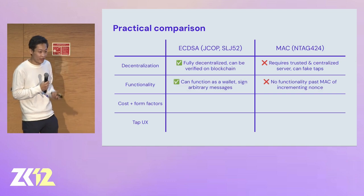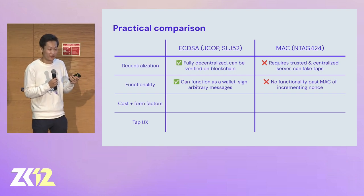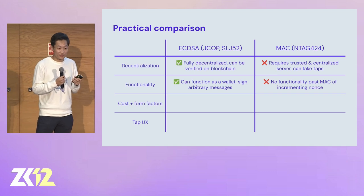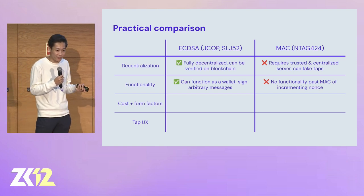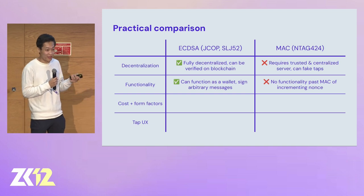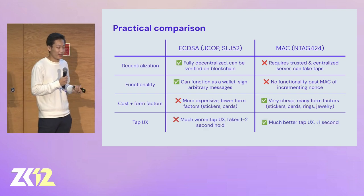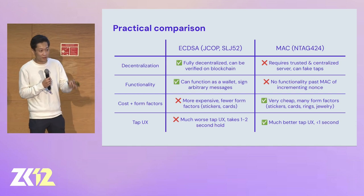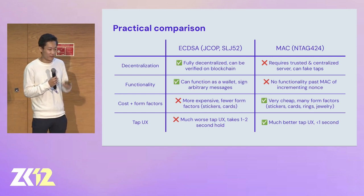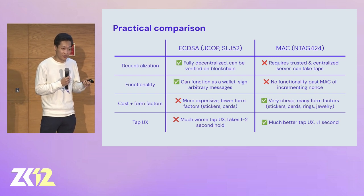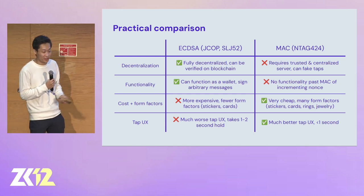So why do we use one card versus another? The eCDSA cards have two really important properties — they're fully decentralized because the card actually custodies the keys. These cards act as full wallets: they custody signing keys, can sign arbitrary data and transactions. But on the other hand, these cards are somewhat difficult to use — they're expensive and much slower. This is the main reason why we use these MAC-based NTag 424 cards for ZK Summit. The tap experience is way better, takes less than a second, versus signing cards which take multiple seconds to generate a signature, because they're generating a signature on the chip in a low-power environment.